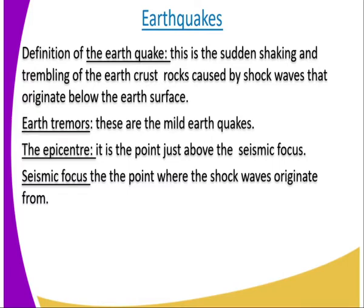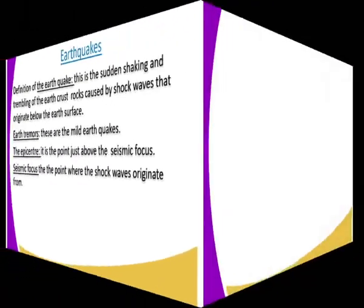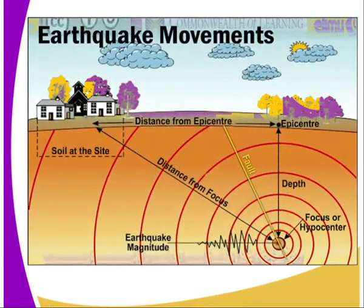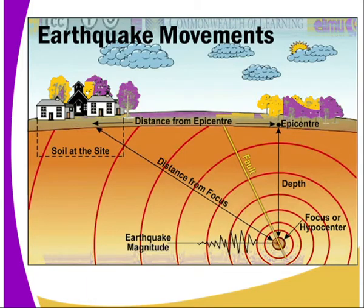When we talk about earth tremors, these are mild earthquakes. We also have the epicenter — it is the point just above the seismic focus. The seismic focus is the point where the shock waves originate from. You can see all those terms in the diagram: the epicenter, the seismic focus, and how the waves move and how the earthquake is caused until it is felt by the human being.